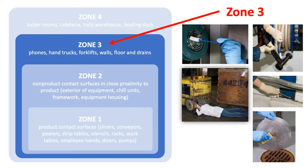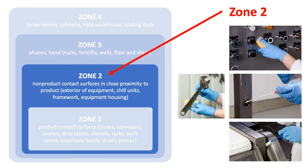Zone 3 surfaces are within the processing facility but further away from direct contact with the product. This might include the floor and the floor drains, walls, forklifts, and hand trucks. Zone 2 surfaces are in close proximity to the product but do not directly contact the product. Examples include the exterior of equipment, including panels and equipment housing, as well as tools that might be used in equipment maintenance.